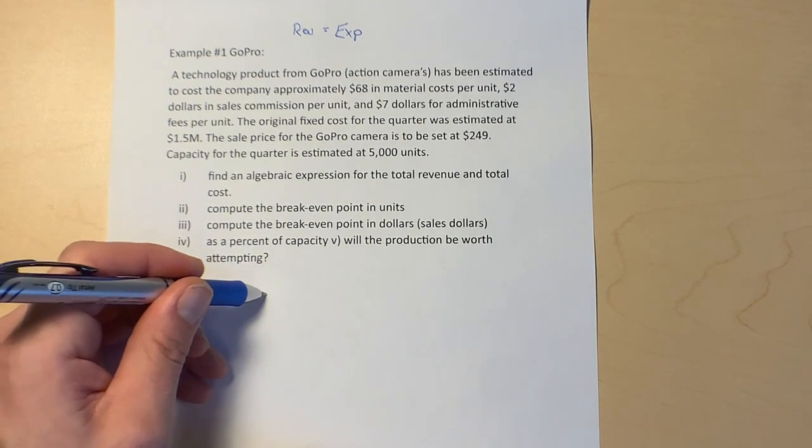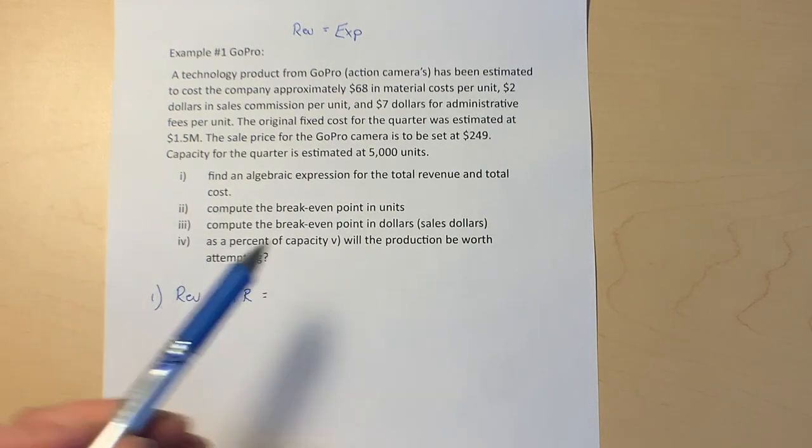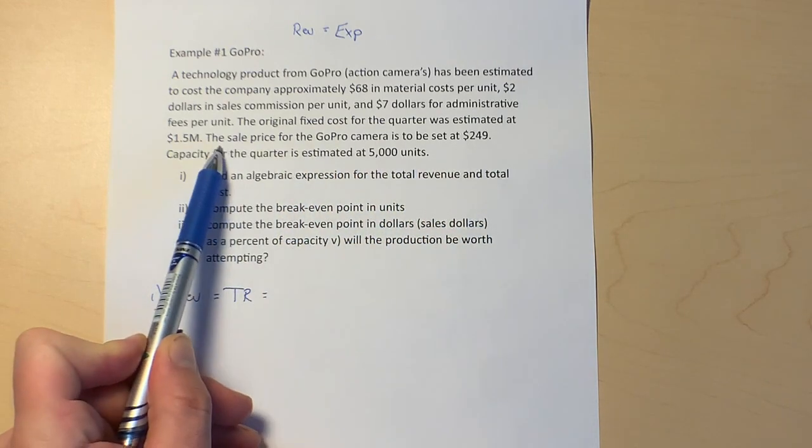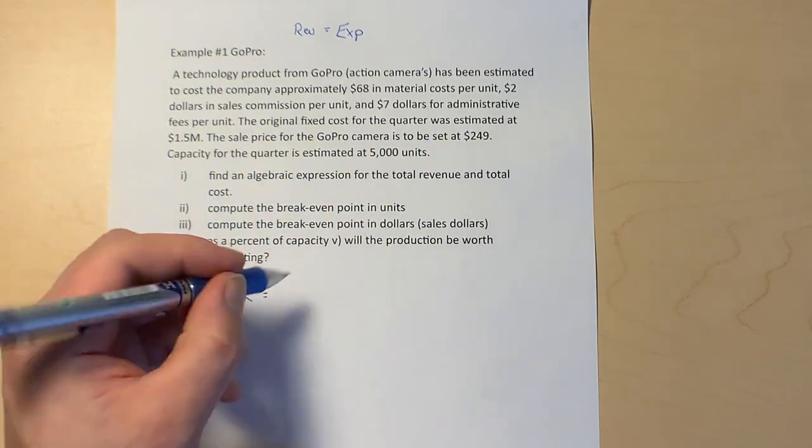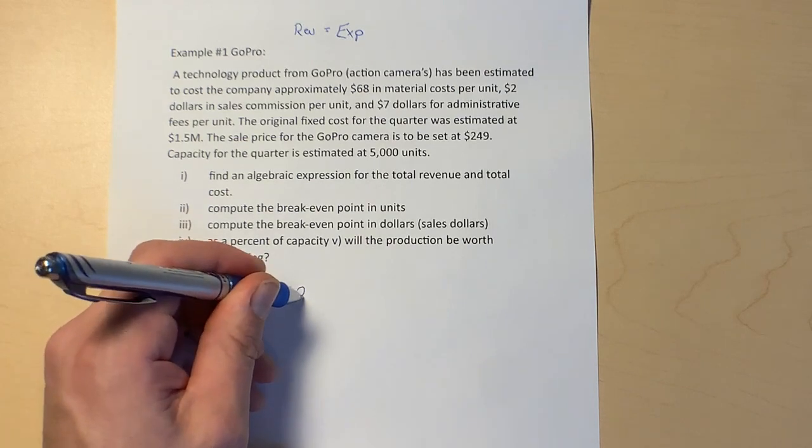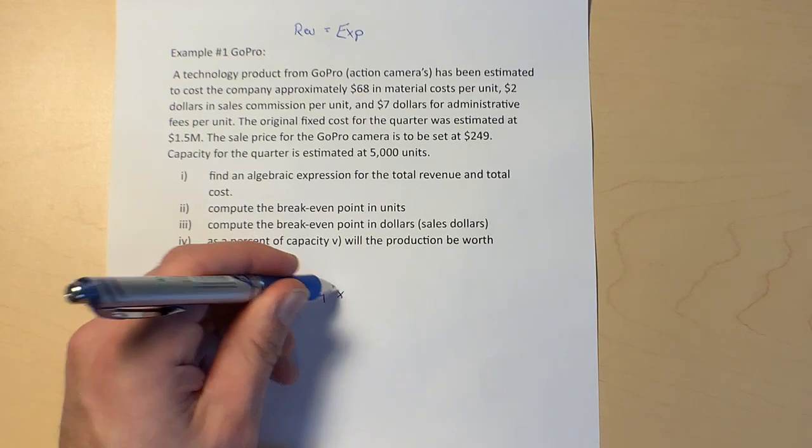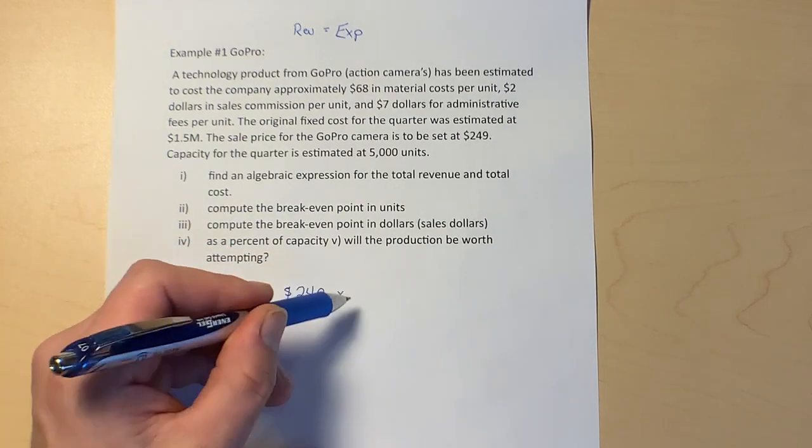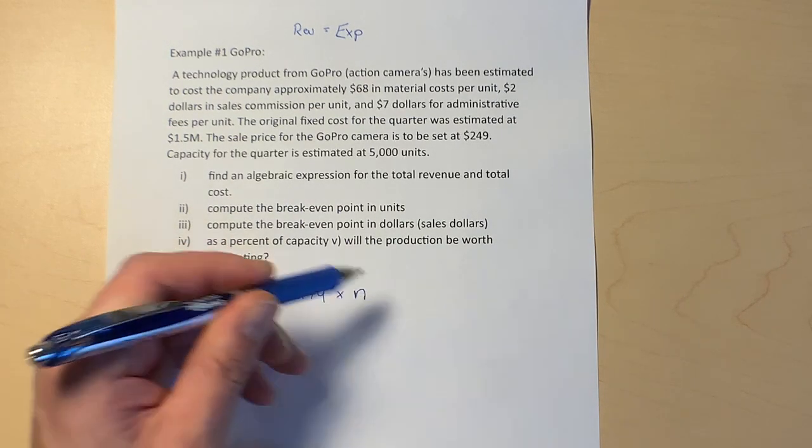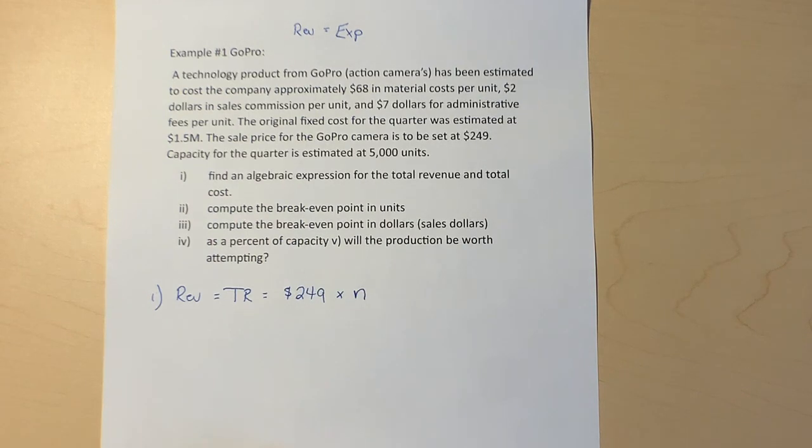All that's going to be is the price per unit, which it says here the sale price for the GoPro camera is set to be $249.